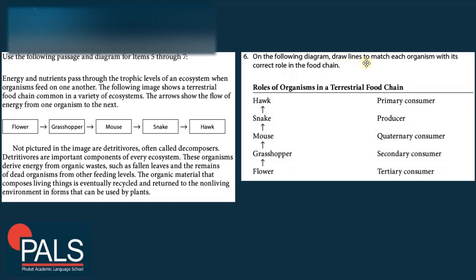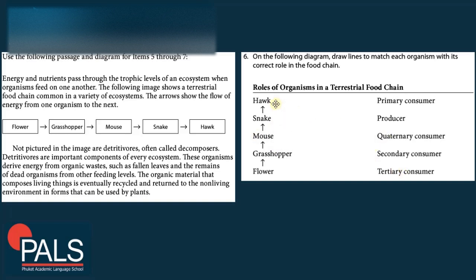Question 6: Draw lines to match each organism with its correct role. The flower is at the very start and is the producer, since flowers produce food via photosynthesis. After the producers come the different consumers: the grasshopper is the primary consumer, the mouse the secondary, the snake the tertiary, and the hawk the quaternary consumer.